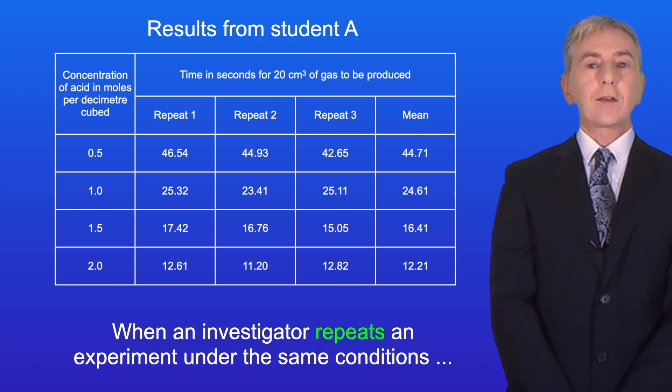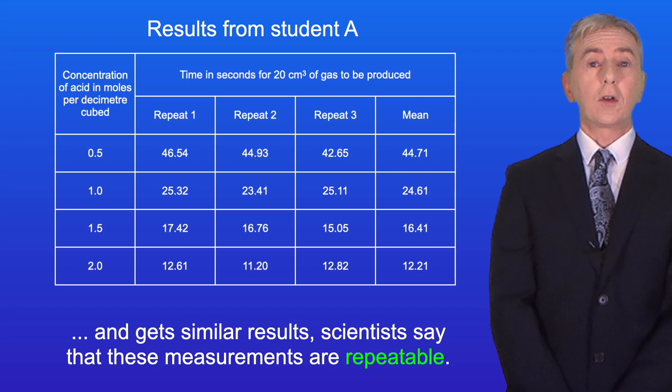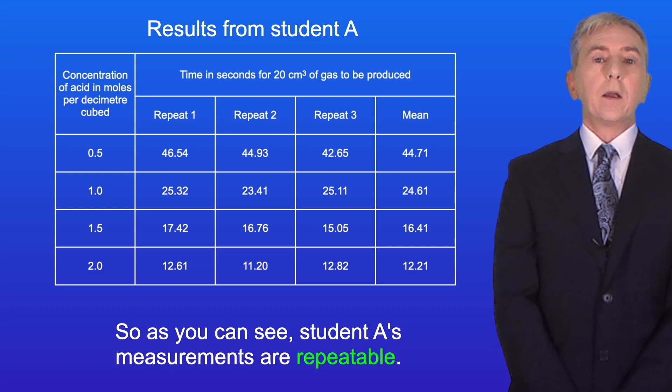When an investigator repeats an experiment under the same conditions and gets similar results, scientists say that these measurements are repeatable. So as you can see student A's measurements are repeatable.